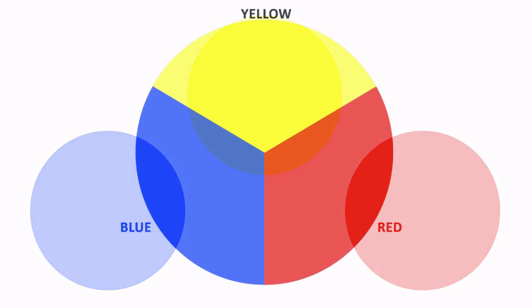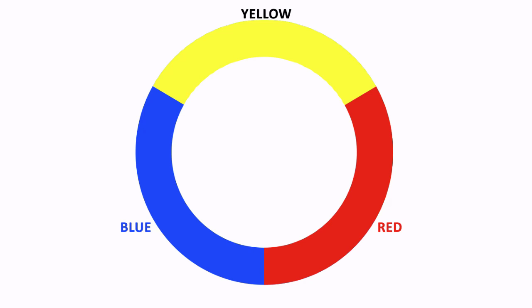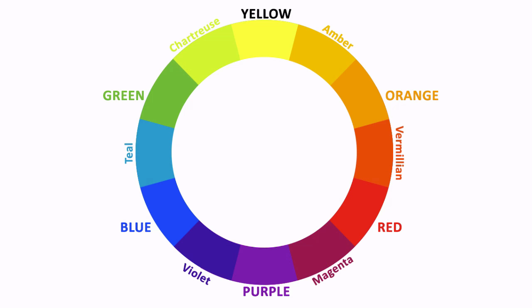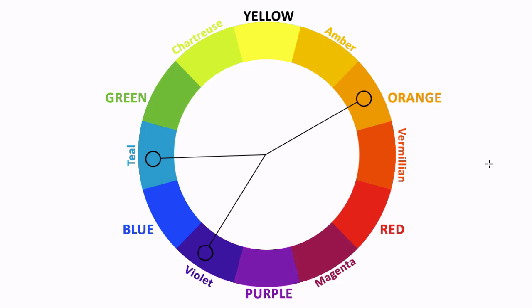Before we begin with the techniques behind how to work with color, it's helpful to understand a little bit about why it's so important. So the first part of this course will be all about basic color theory. We will look at the classic color wheel and how it works. We'll explore what it means to use warm and cool colors, and how to create color schemes that are vibrant and inviting.